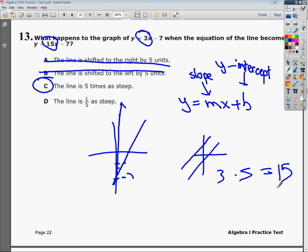If I had gone the other way, it would have been a fifth as steep, but I didn't. I started here and got to here. So I know it's the 5 times thing. And if y equals 15x minus 7, graph it in your calculator. It's super steep. So you know it can't be one-fifth steeper because that would be less steep than the original. So that's your answer to number 13. It's C.